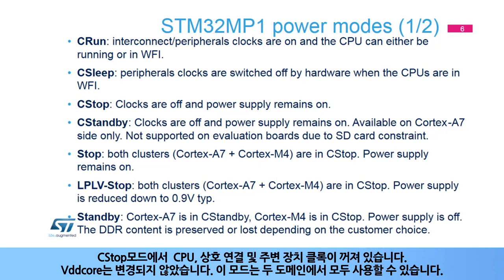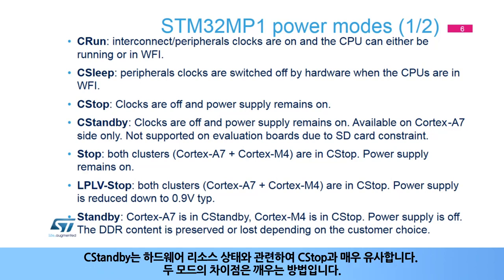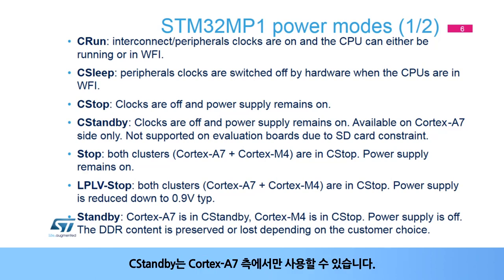In C-Stop mode, the CPU, interconnect, and peripheral clocks are off; VDD-Core is unchanged. This mode is available on both domains. C-Standby is very similar to C-Stop regarding the hardware resource states. The difference between both modes is the way to wake up. Note that C-Standby is available on the Cortex-A7 side only.